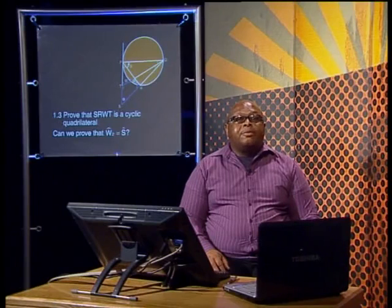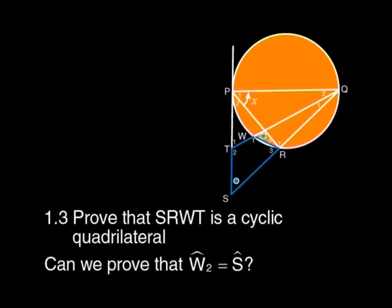Moving on to question 1.3, prove that SRWT is a cyclic quadrilateral. Think about how to prove that a quad is cyclic. We could prove that the opposite angles are supplementary. But we don't know much about these angles. Or we could prove that an exterior angle is equal to the opposite internal angle. There are two possibilities here. We could try to prove that T1 equals R3. But we haven't worked with these angles in previous questions.